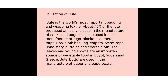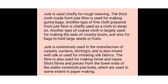Jute is the world's most important bagging and wrapping textile. About 75% of jute production is annually used in the manufacture of sacks and bags. It is also used in the manufacture of paper and paperboard, rugs, blankets, carpets, tarpaulins, cloth, twines, ropes, curtains, and clothing. The leaves and young shoots are also an important source of vegetable food in Egypt, Sudan, and Greece.